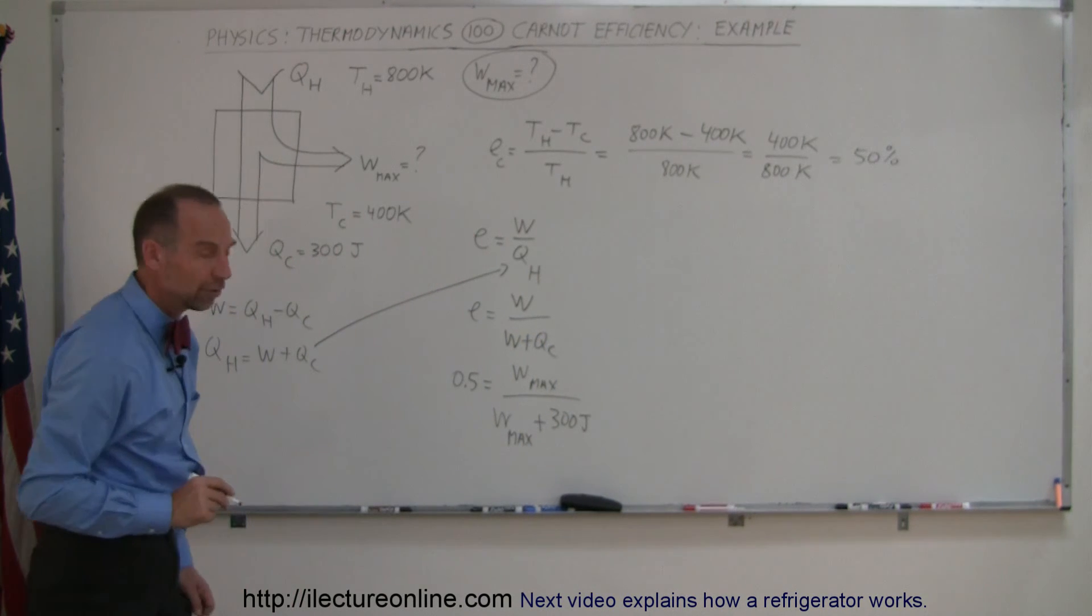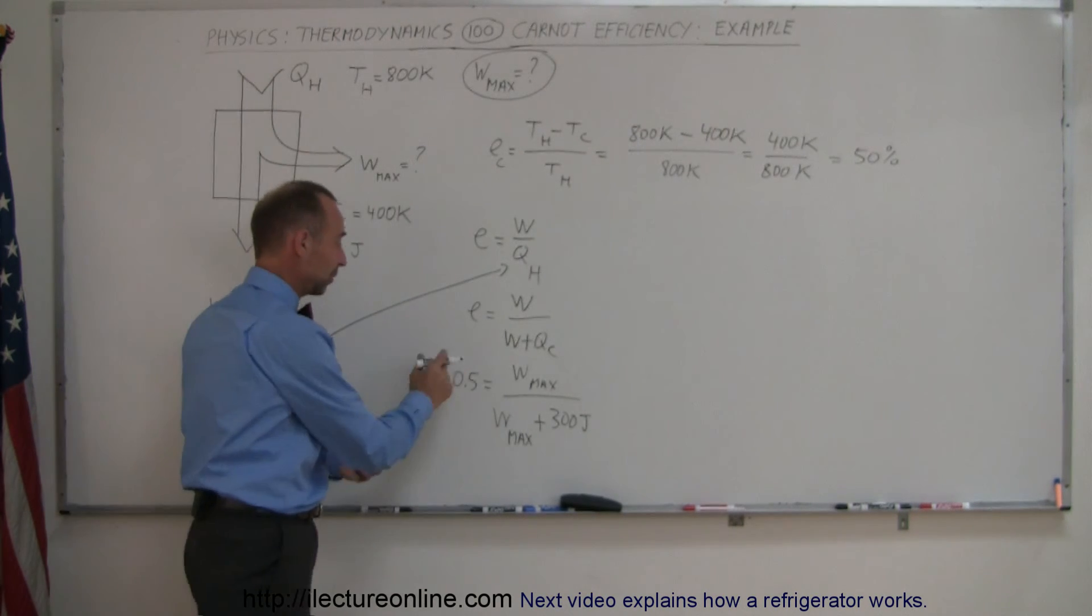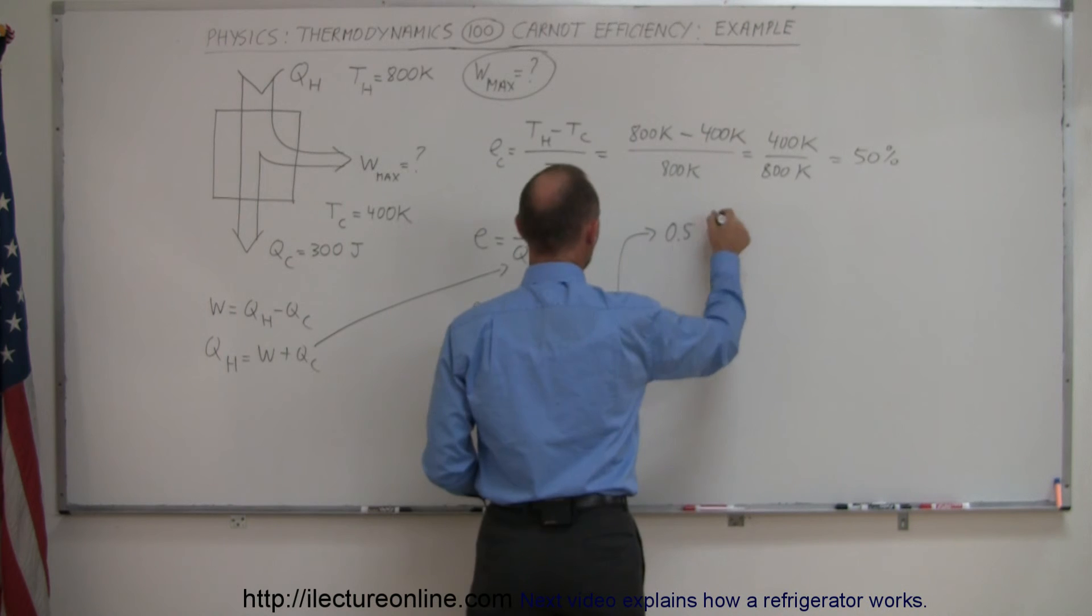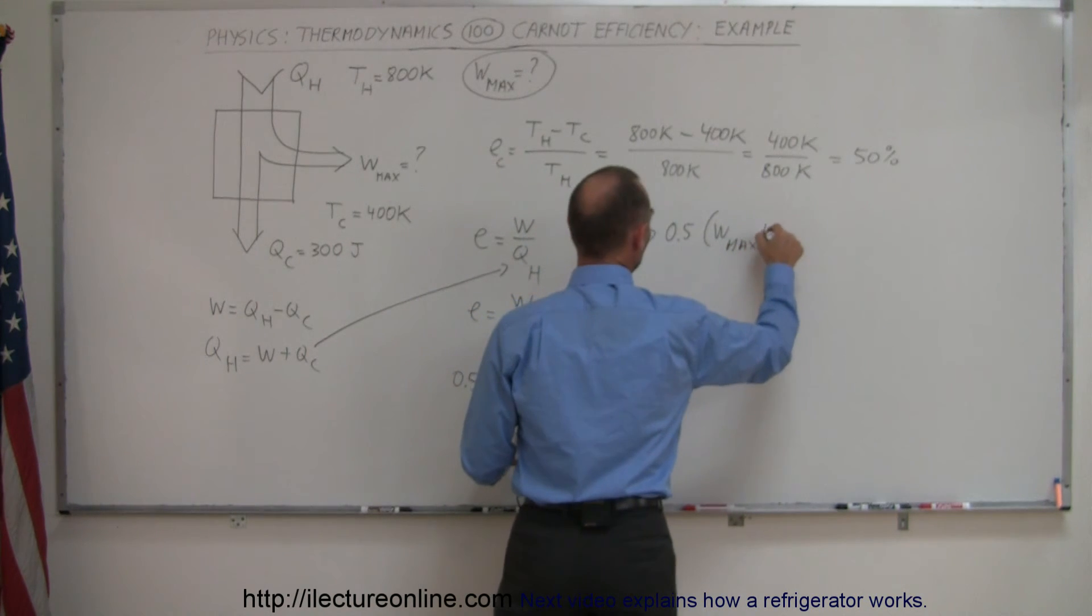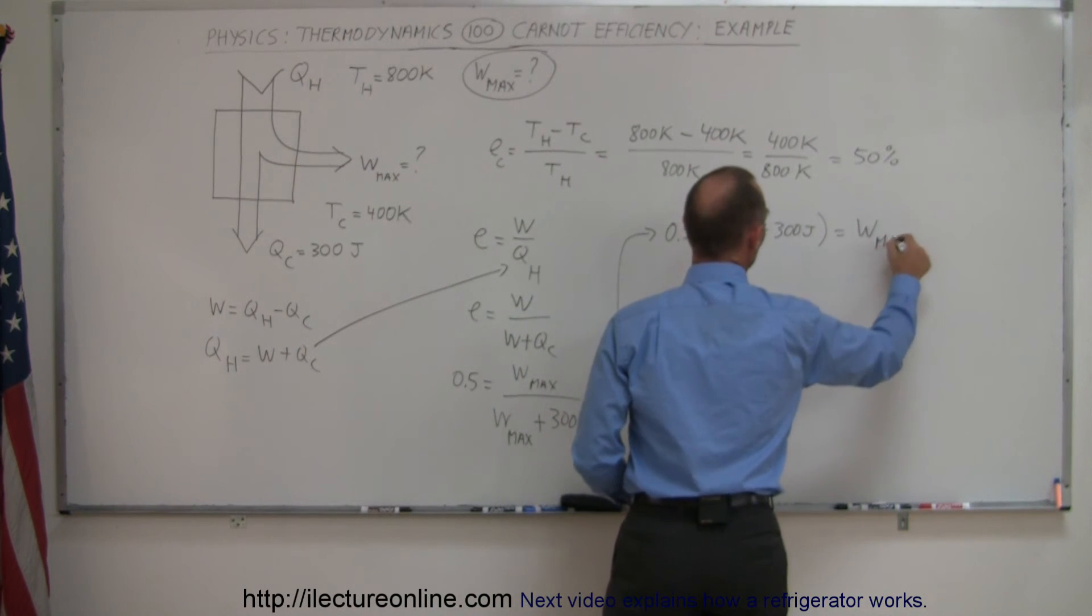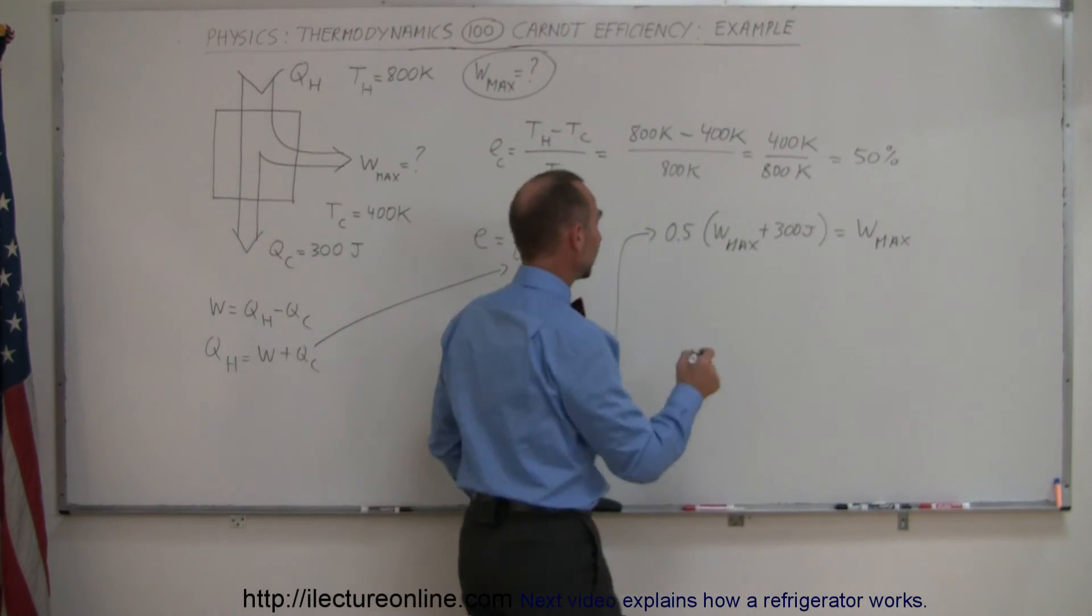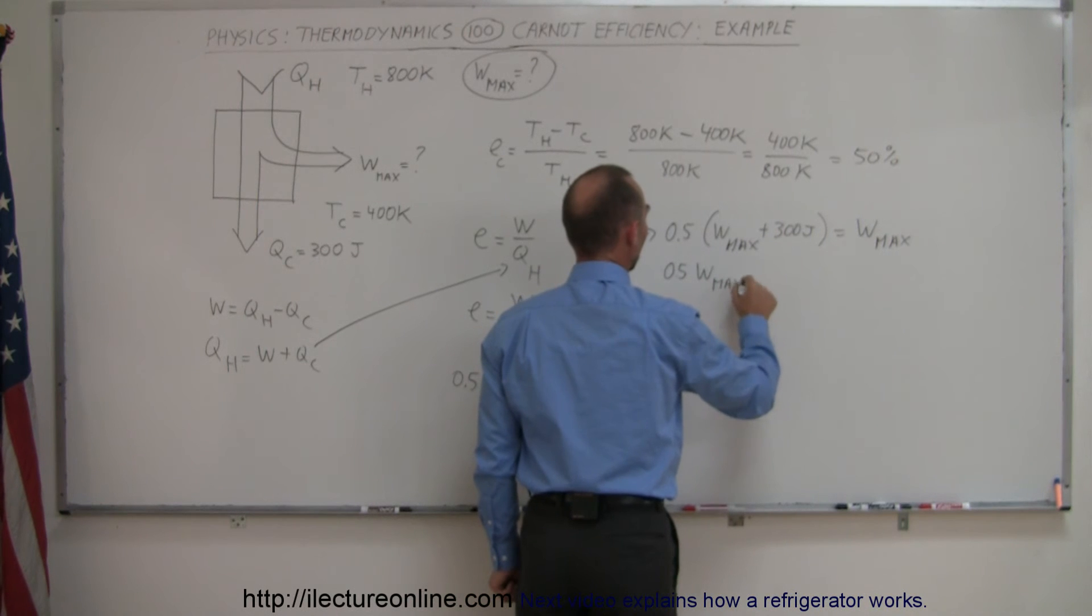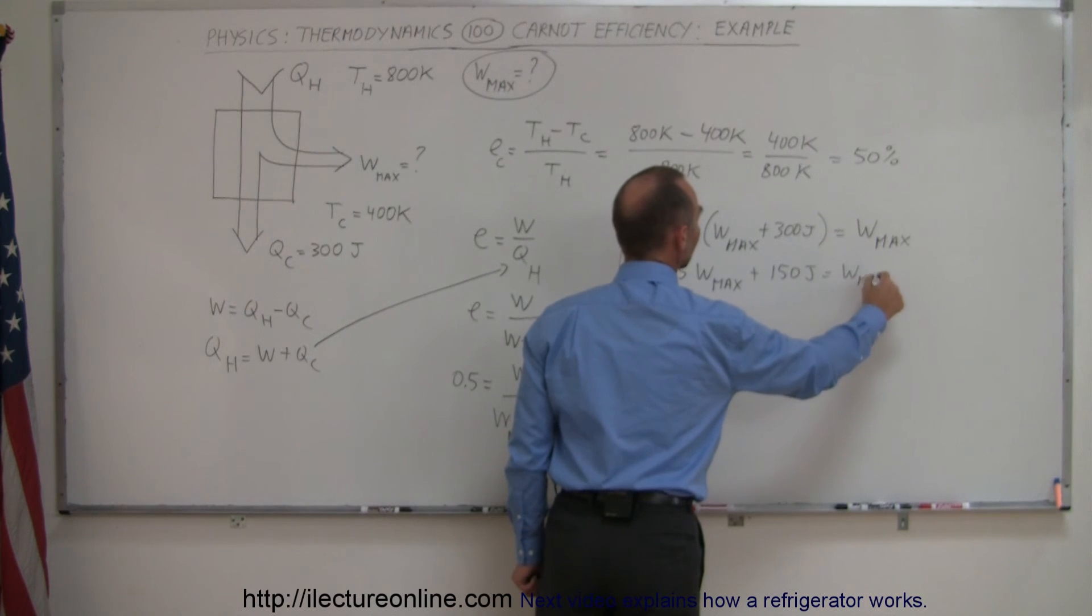So now we have to solve this equation for work max. First thing we do is we cross multiply, so we come over here, and we have 0.5 times work max plus 300 joules is equal to work max. Now we multiply this through, get rid of parentheses, so 0.5 work max plus half of that, that would be 150 joules, equals work max.